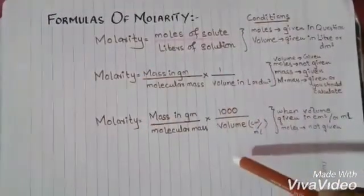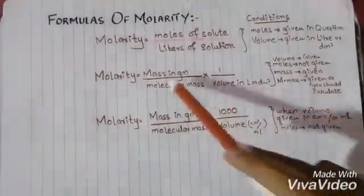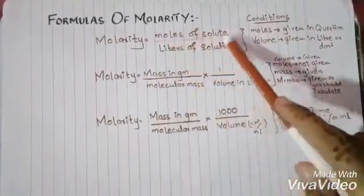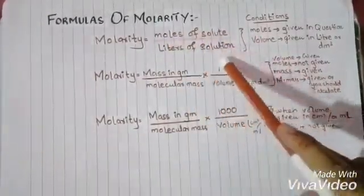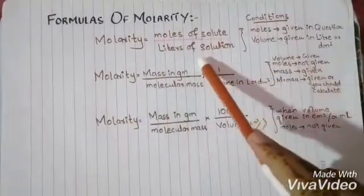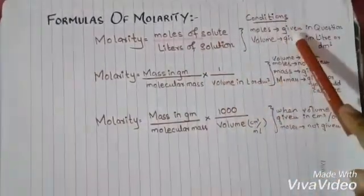These three formulas are used in the numericals. Number one: moles of solute per liter of solution. This formula will apply when moles are given in the question and volume is given in liters or dm cube.